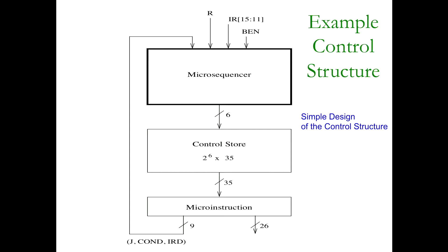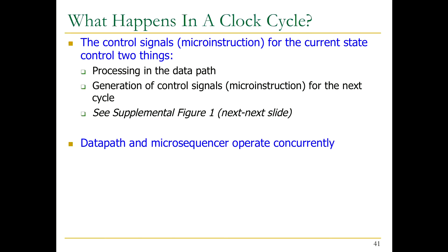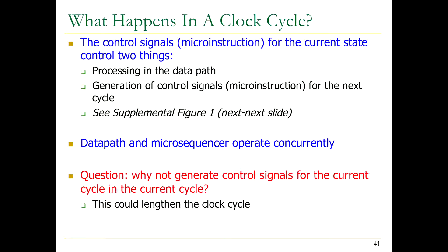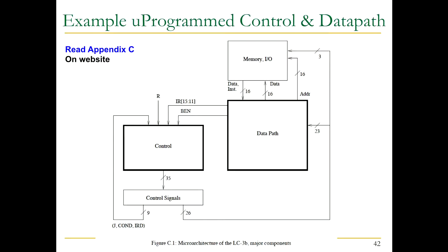An ISA is essentially a programming language. If you know one, learning another is hopefully easy — not always, because it depends on the differences. ARM versus x86 are two different ISAs but share a lot of similarities in implementation, even though one claims to be RISC and the other CISC. Now let's put the control structure in context: these 26 control signals go to the data path and memory, and also to the micro-sequencer.